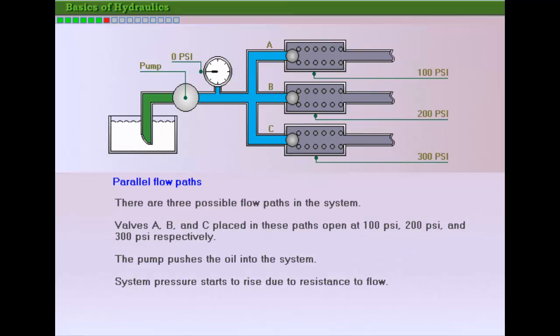Fluids always take the path of least resistance. When parallel paths of different resistance are present in a system, the pressure buildup in the system is just enough to overcome the path with the least resistance and push the fluid through it.